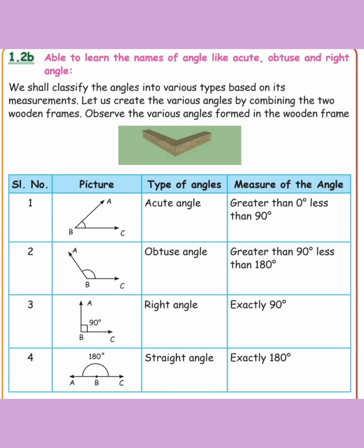We shall classify the angles into various types based on their measurements. If you look at the tabular form: an acute angle is an angle greater than 0 degrees and less than 90 degrees. For example, 30 degrees is less than 90 degrees, so it is an acute angle.